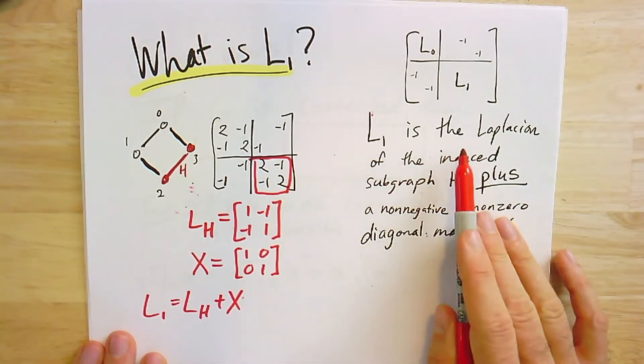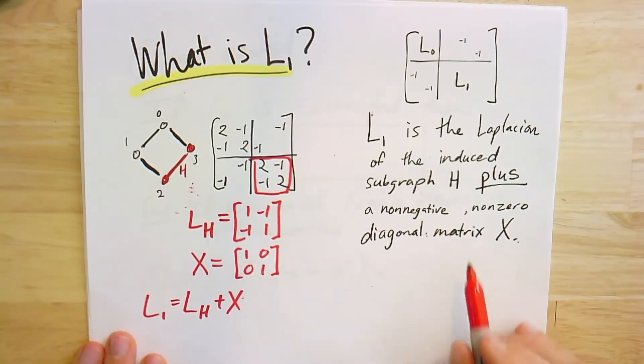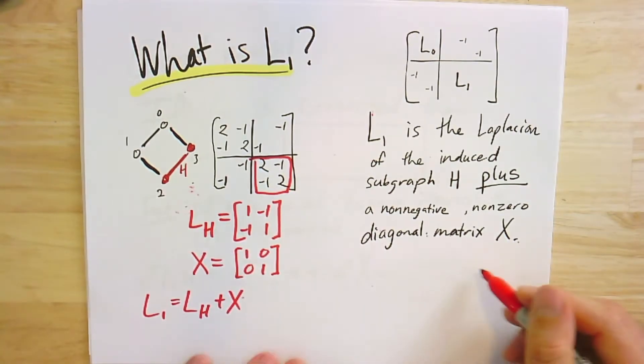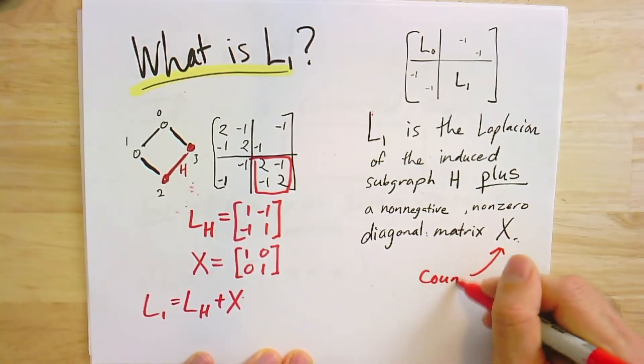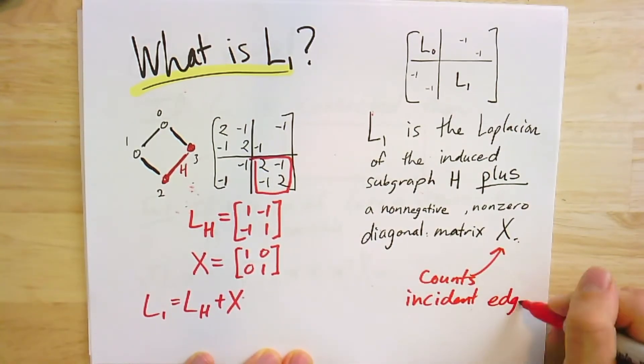So here's what I've written is true: L1 is the Laplacian of this induced subgraph plus some non-negative—that is, there's no negative numbers in X—it's not zero, and it's diagonal. And this diagonal here, it sort of counts the incident edges, right? For every diagonal, it's the edges incident to that vertex that are in EG but not in EH, so the edges we lost.